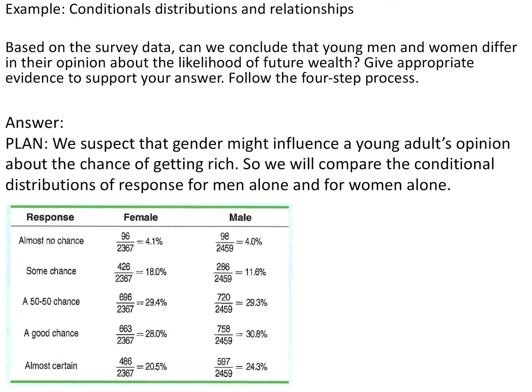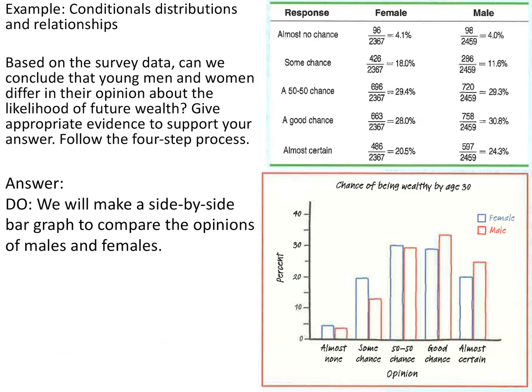The next thing you need to do is make a plan. It is possible that you already suspect there is one way it's going to lean. We suspect that gender might influence young adults' opinions. So we are going to compare the conditional distributions for men alone and for women alone. We would make a plan, and then actually do the calculations and compare them with some type of graph.